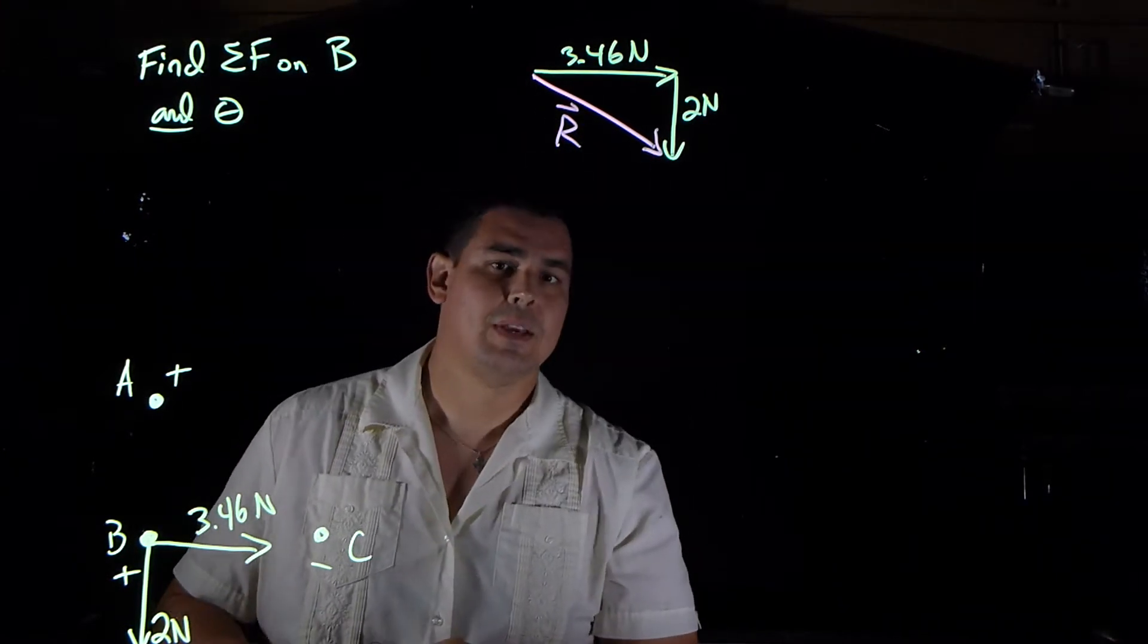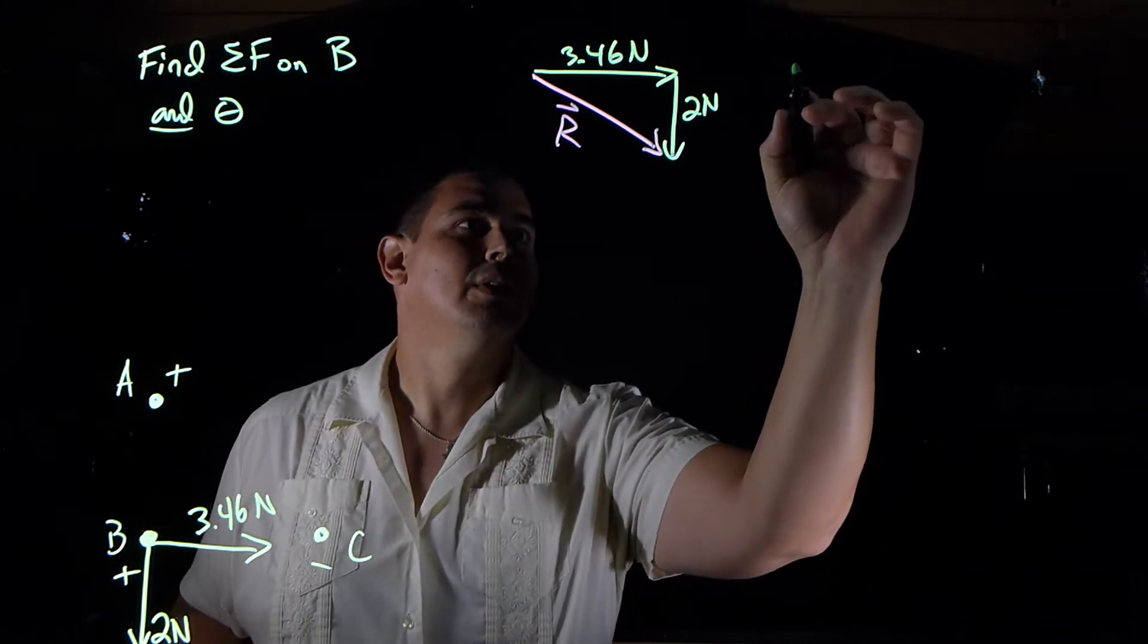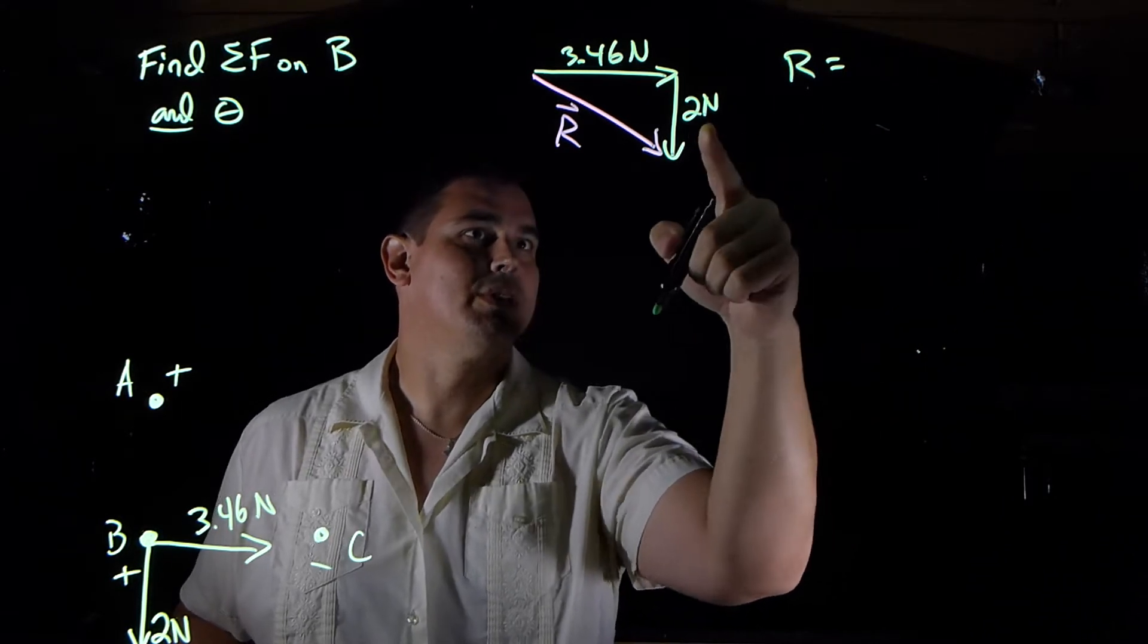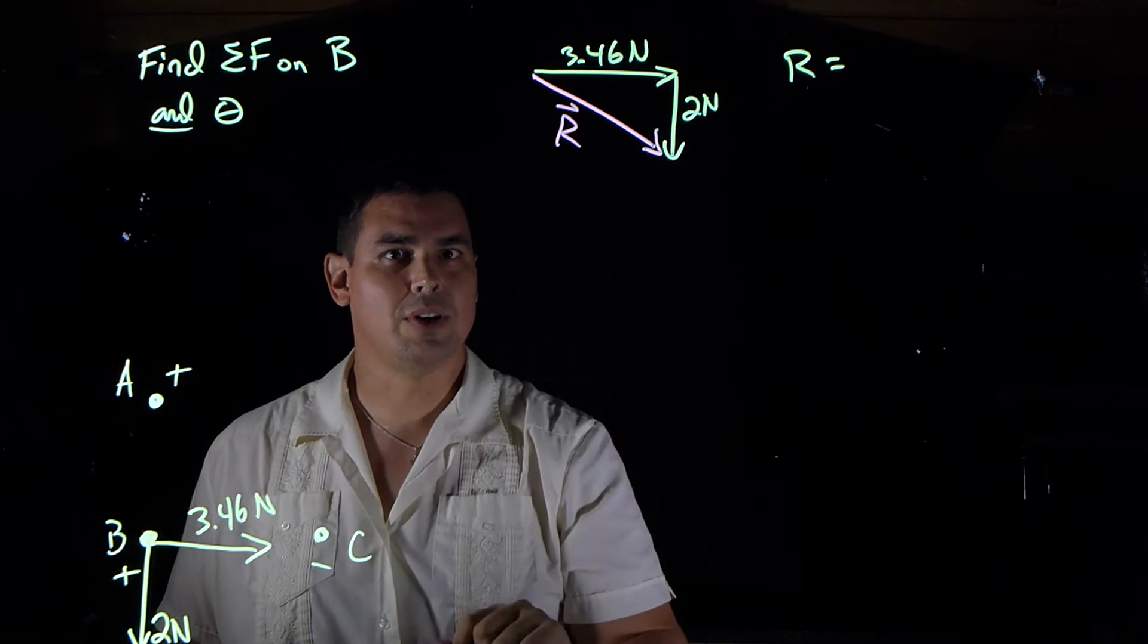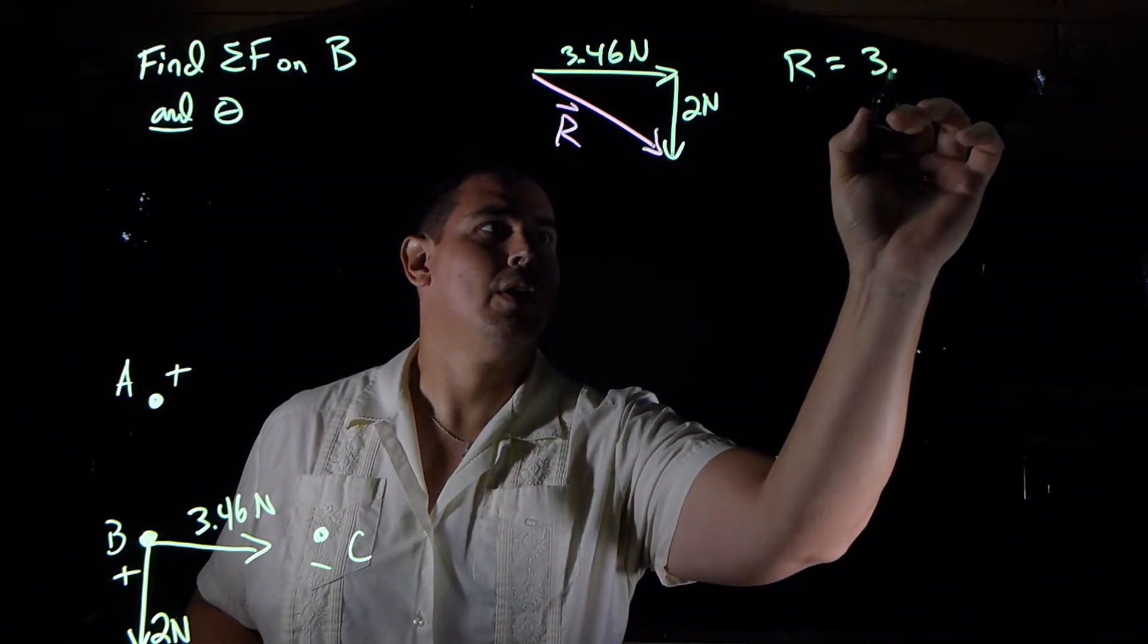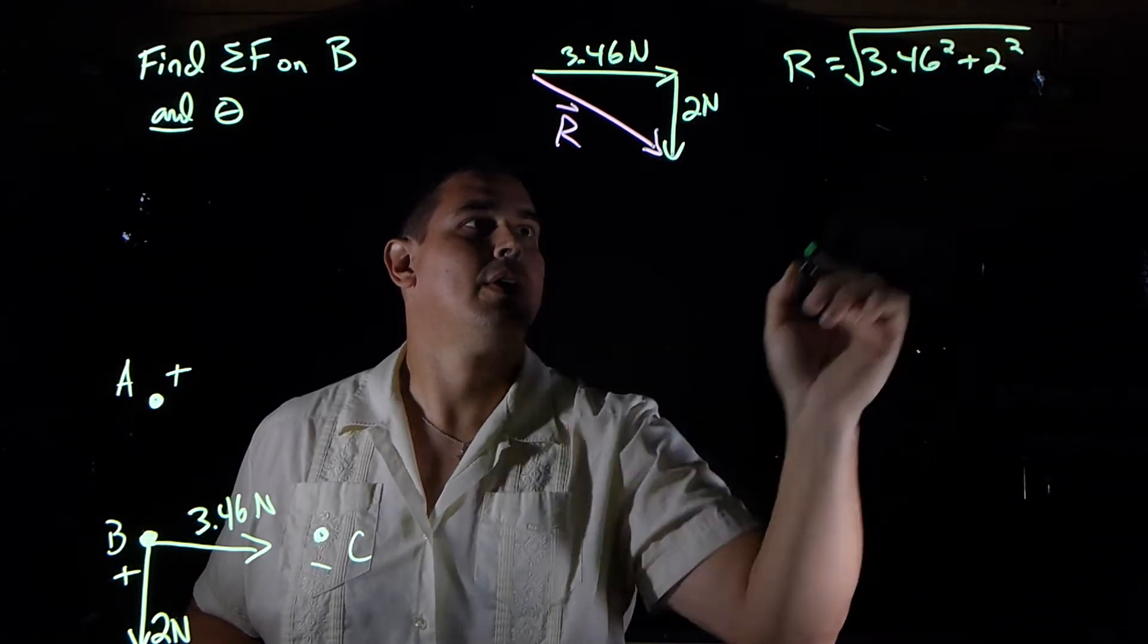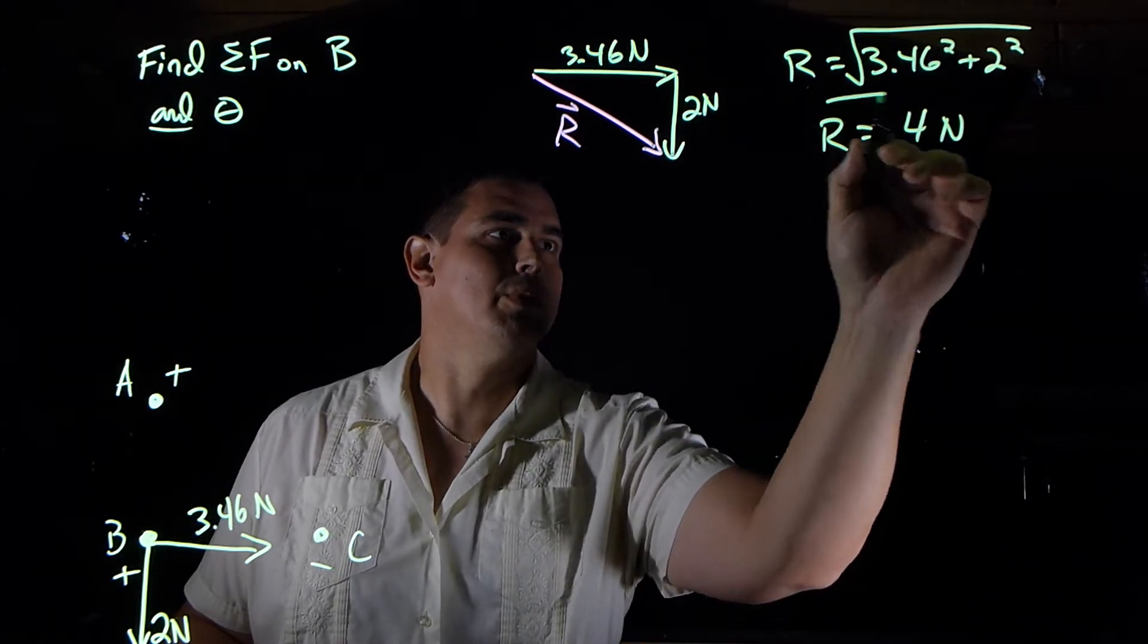Okay, so how do I find the magnitude? Pythagorean theorem, right, we've done this. So the resultant is going to be equal to the square root of the sum of the two sides, because A squared plus B squared equals C squared. So if I rewrite that, I can say it's the square root of 3.46 squared plus 2 squared, and this comes out to be 4 newtons.